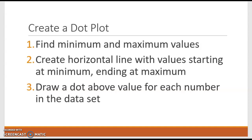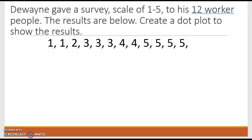Dewayne gave a survey, scale of one to five, to his 12 worker people. The results are below. Create a dot plot to show the result. Now I've organized the data for you. You can see, obviously, if this is scale one to five, we have data in one to five. So we draw our horizontal line and we start at one, two, three, four, five. Now I free-handed this, obviously it's not very straight, but you can see my numbers are pretty much equidistant.